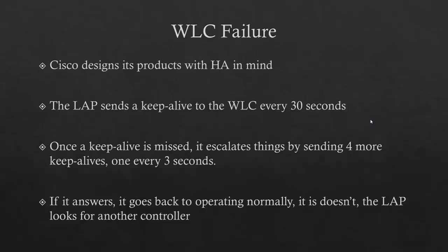What happens when the wireless LAN controller fails? Cisco designs its products with high availability in mind. The lightweight access point sends a keep-alive to the wireless LAN controller every 30 seconds. Once a keep-alive is missed, things escalate and it sends four more keep-alives, one every three seconds. If the wireless LAN controller answers, everything goes back to normal. If it doesn't, the lightweight access point looks for another controller. Total time is 46 seconds — if a lightweight access point can't talk to a wireless LAN controller within 46 seconds, it looks for another IP address in memory or another CAPWAP tunnel to send to another controller.